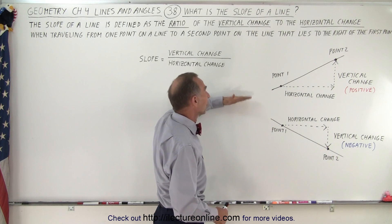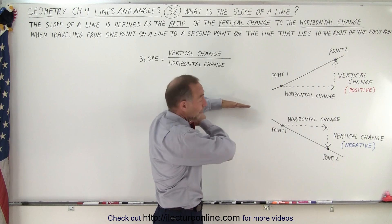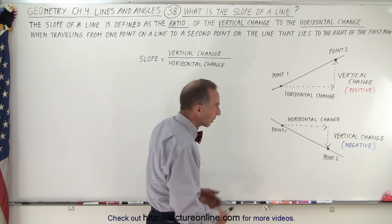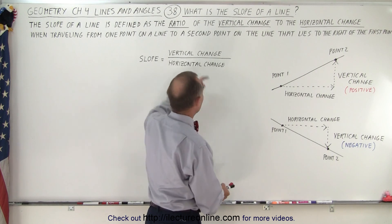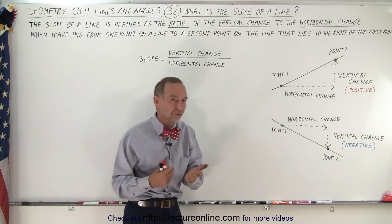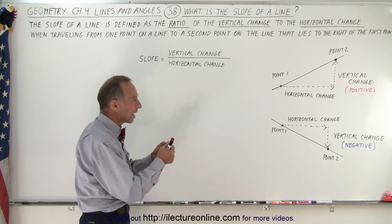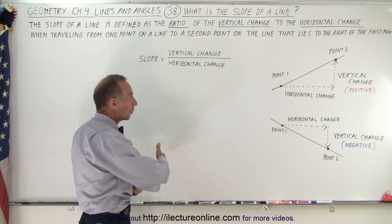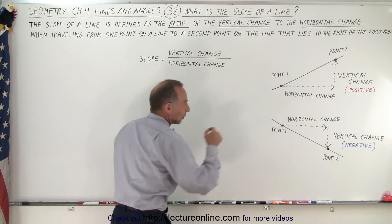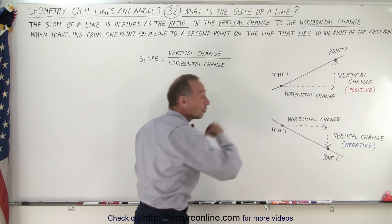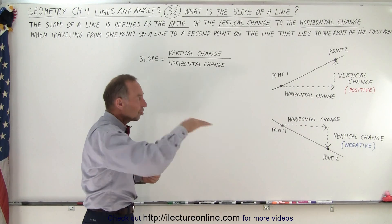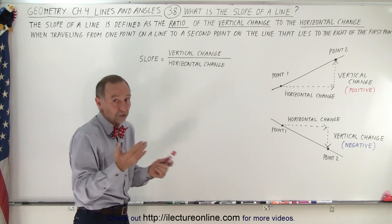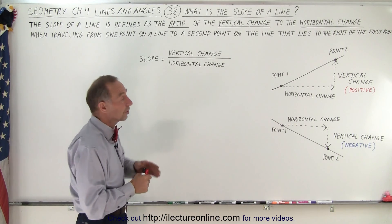Of course, a line that is neither going up nor down — if the line is perfectly horizontal — then there is no slope. We call that the zero slope because there's no change in the vertical direction, so the numerator ends up with a zero. What we need to understand is that it's simply a ratio. When we travel from one point on the line to a second point to its right, there will be a change in the horizontal direction and a change in the vertical direction, provided that the slope is not zero.